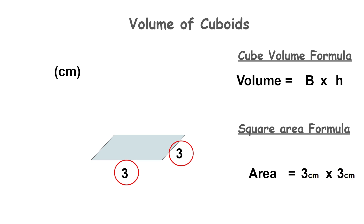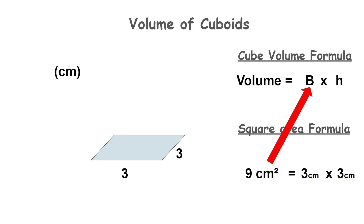Three centimeters multiplied by three centimeters equals nine centimeters squared. So nine centimeters squared is the area of the base shape of the cuboid. This is important because the area of the base shape is what capital B represents in the formula for the volume of the cuboid — so capital B equals nine centimeters squared.